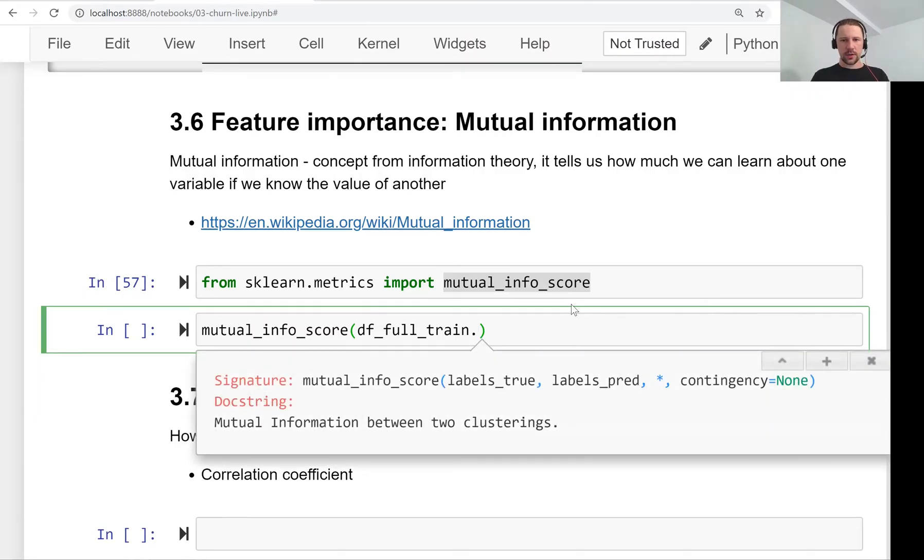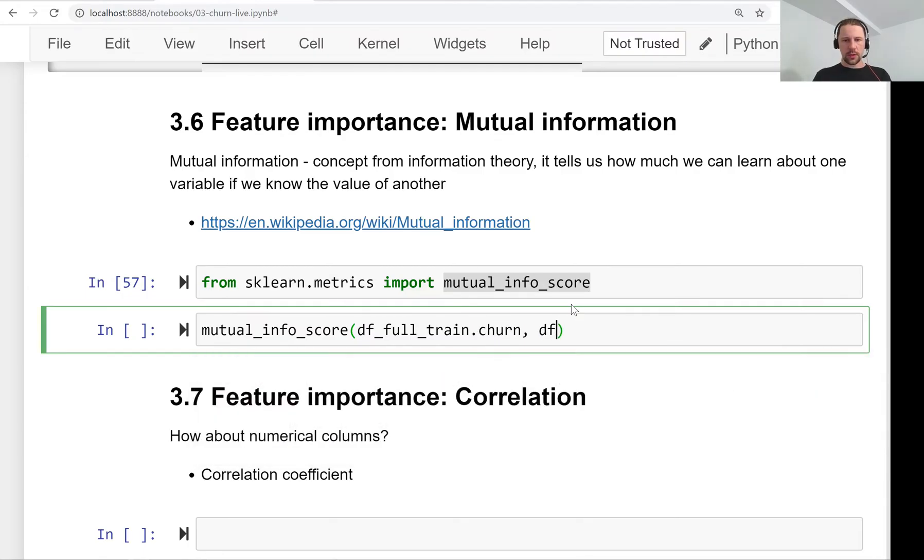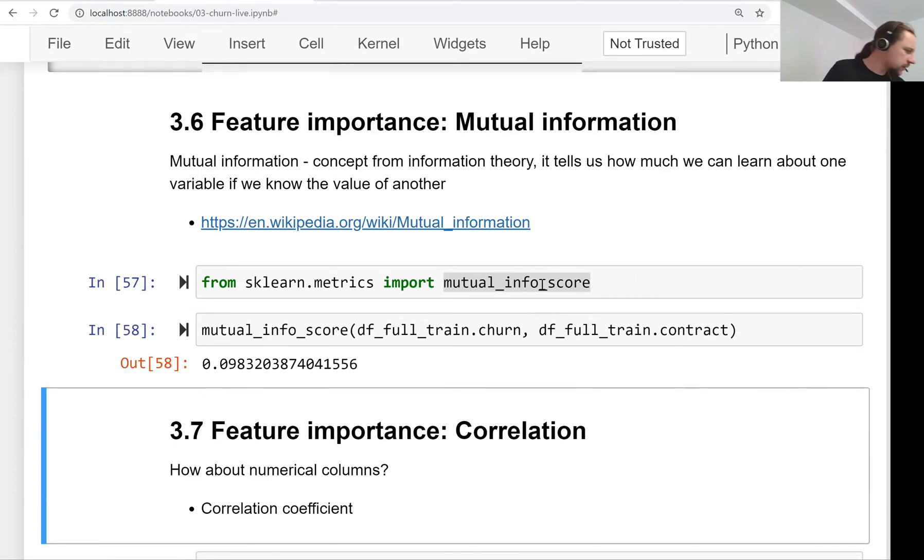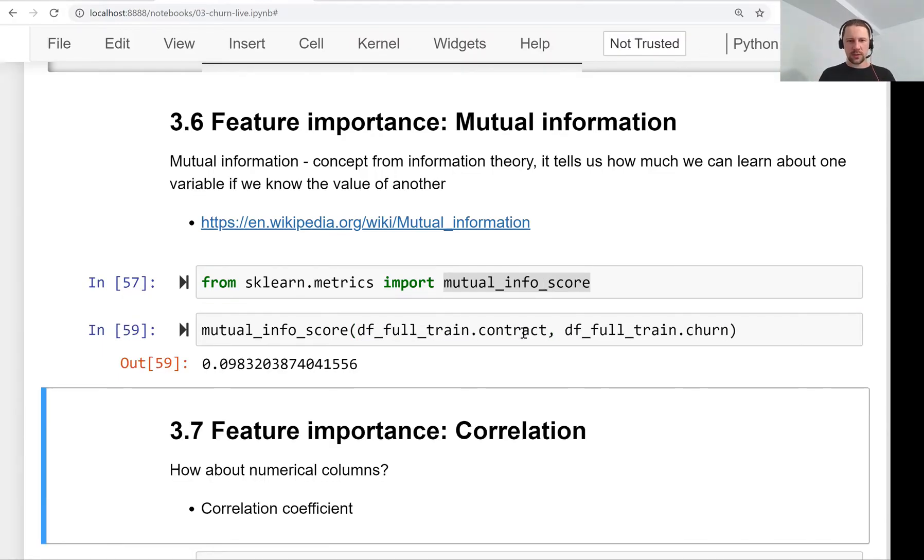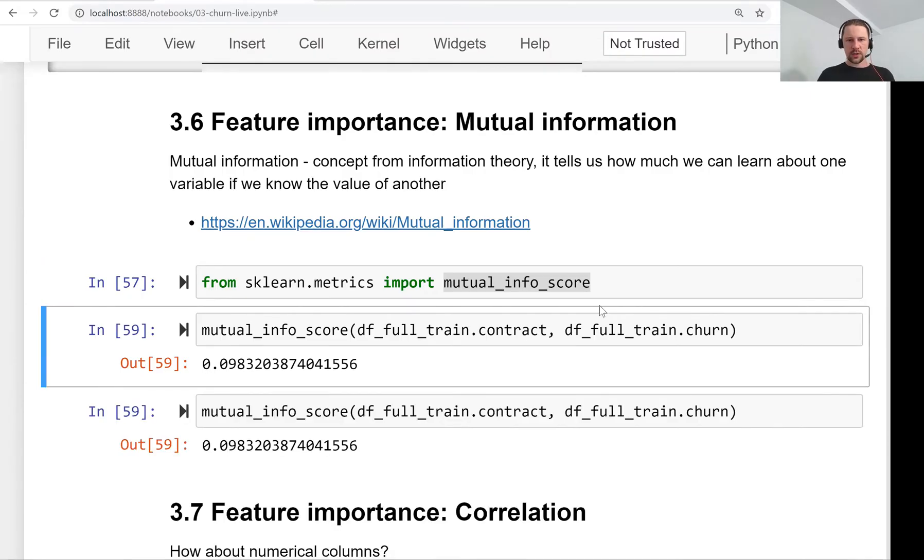Another variable that we know, like a feature—let's say contract—so we provide these two values. It doesn't matter in which order we pass them; it's actually the same regardless of the order.